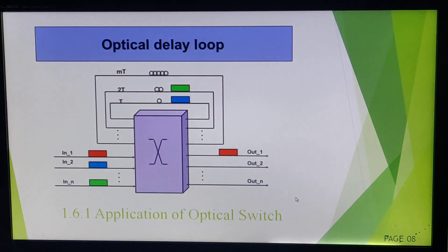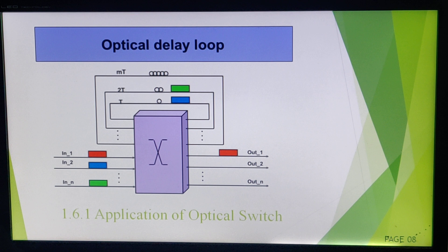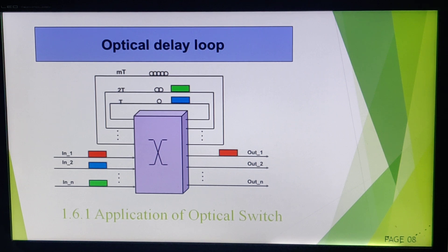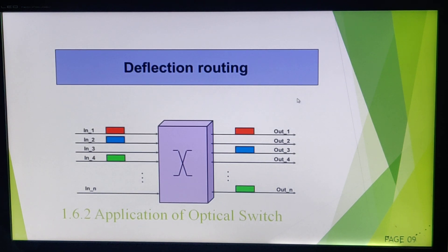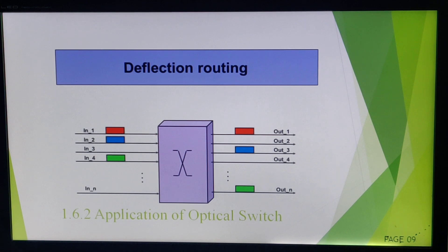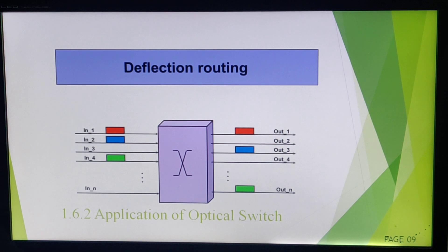Here is an example application of an optical switch using N inputs and N outputs. This optical switch provides delay — whenever I transmit an input signal and want the output at a particular instance after some seconds, I use an optical delay loop with the optical switch and receive the output after a certain delay. Another application example is deflection routing, where it is not compulsory that port one input gives output at port one only — the output can be received at other ports as well.